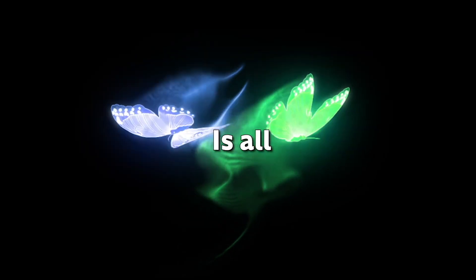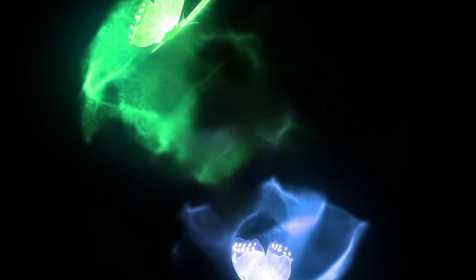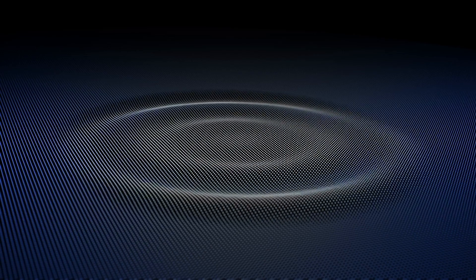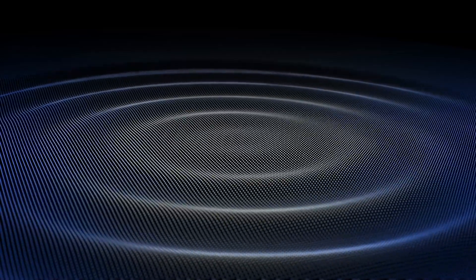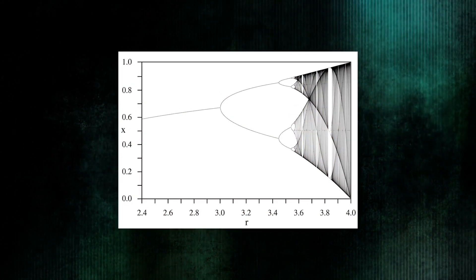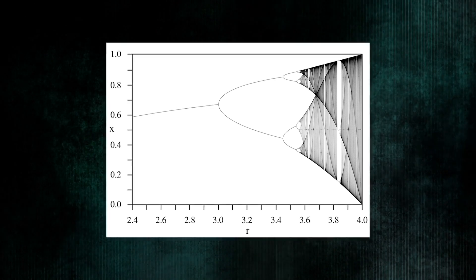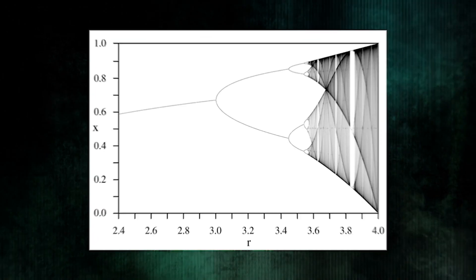Chaos theory is all about the butterfly effect — small changes at the beginning can lead to big changes later on. It's like when you drop a pebble into a pond and watch the ripples spread out. You might think that if you drop the same pebble in the same way, the ripples will always look the same. But chaos theory says that's not true. Even tiny differences in how you drop the pebble can make the ripples spread out differently.